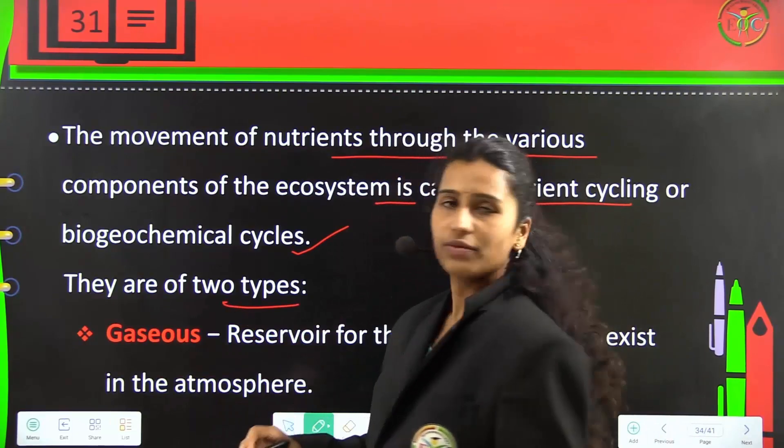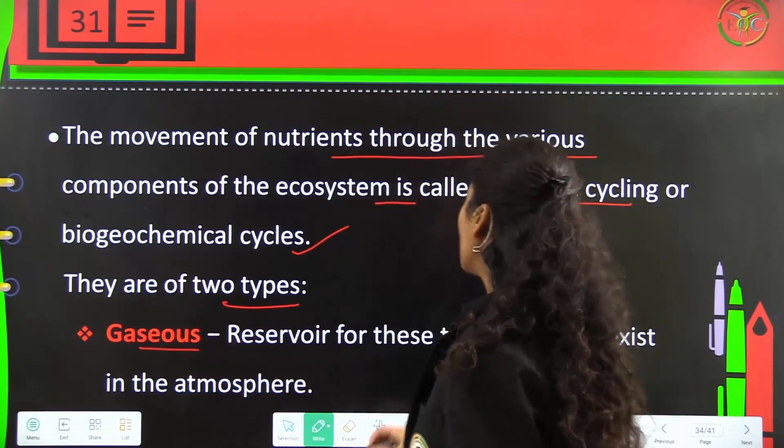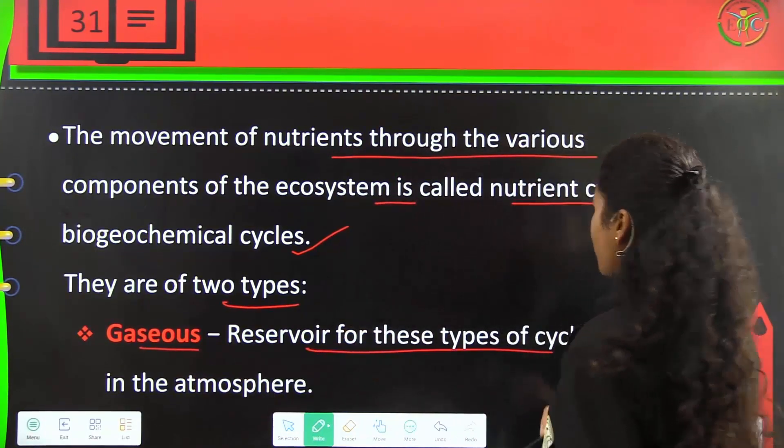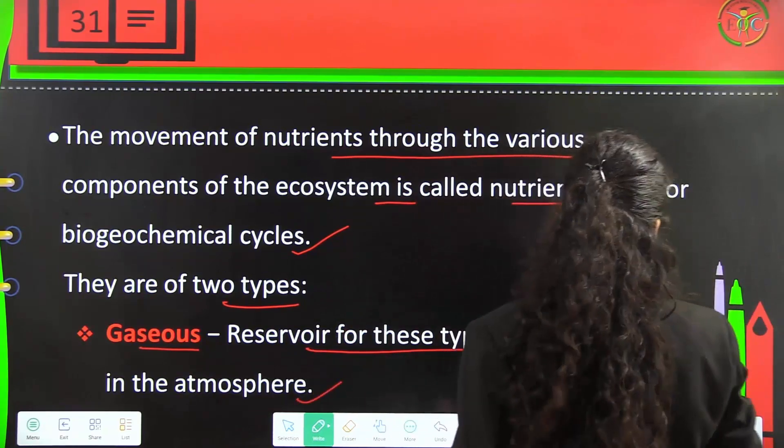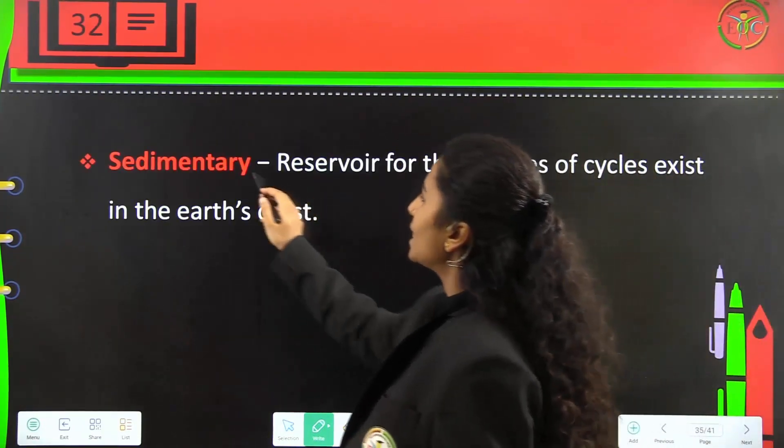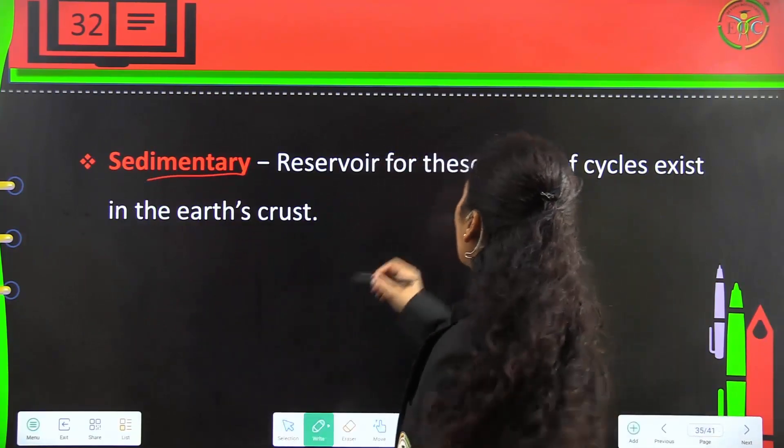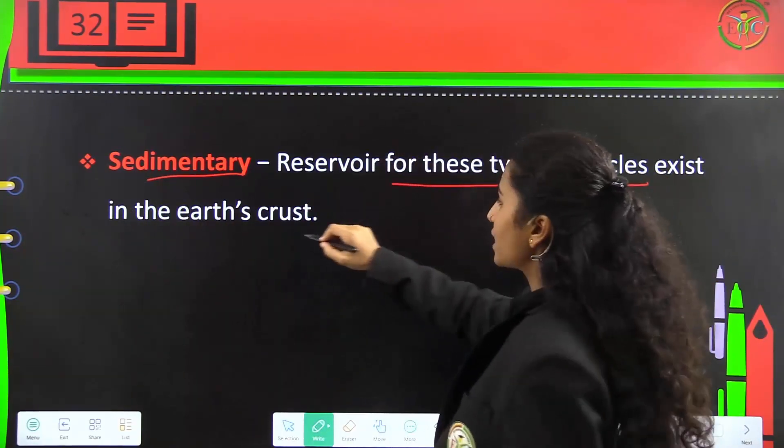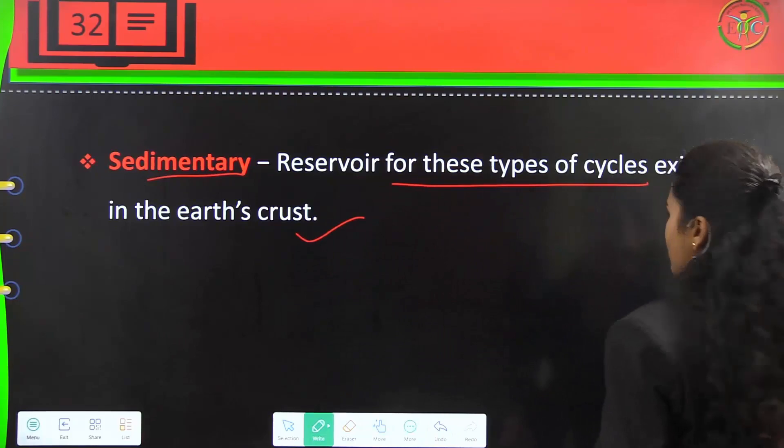There are two types: gaseous cycle, where reservoirs exist in the atmosphere, and sedimentary cycle, where reservoirs exist in the earth's crust.